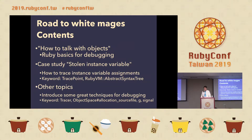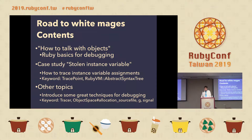In this talk, we are talking about debugging. First, I will talk about Ruby basics useful for debugging. Second, the main content: how to trace instance variable assignment — using TracePoint and RubyVM::AbstractSyntaxTree for debugging. Third, I will introduce some great techniques.